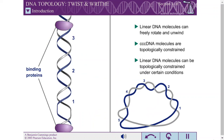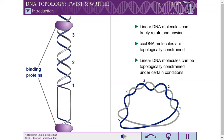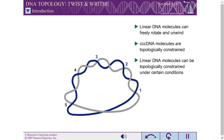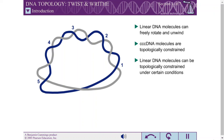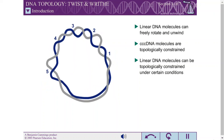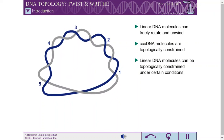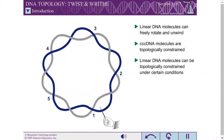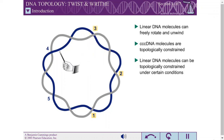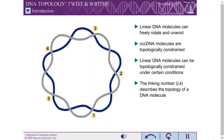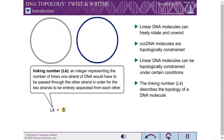Even the linear DNA molecules of eukaryotic chromosomes can be topologically constrained because of their interactions with other cellular components. Since each of the two strands of CCC DNA are covalently linked circular chains, and because they coil around one another, the strands cannot be separated from each other without breaking a covalent bond. The number of times one strand would have to be passed through the other strand in order for the two strands to be entirely separated is called the linking number. The linking number is always an integer and is an invariant topological property of CCC DNA. The linking number is the sum of two geometric components called twist and writhe.